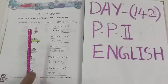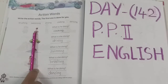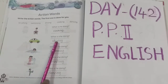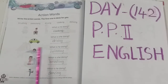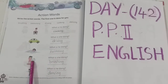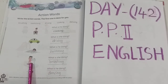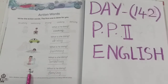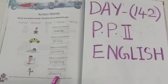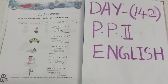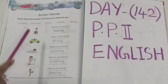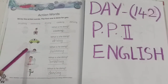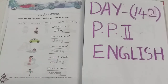What is he doing? Cooking. What is he doing? Driving. What is he doing? Swimming. What is he doing? Brushing. What is he doing? Dancing. So here you have learned the action words. Cooking, driving, swimming, brushing, dancing — these all are action words. I hope you have understood the action words. Thank you.